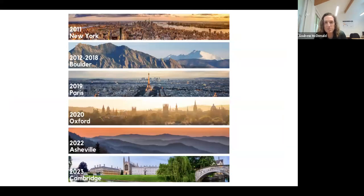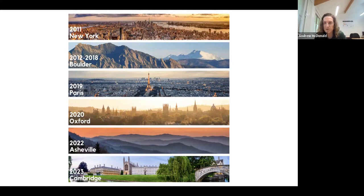The conference has been hosted all over the place. It began in 2011 in New York, then was in Boulder for a series of years hosted by the University of Colorado Boulder and NOAA. It was then in Paris, Oxford during COVID. Last year's conference was in Asheville, with Douglas Rao from the North Carolina Institute for Climate Science helping co-organize. This year it was in Cambridge. Next year could be anywhere — reach out if you have any ideas.